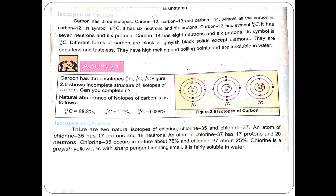Next, the isotopes of chlorine. There are two naturally occurring isotopes of chlorine: chlorine-35 and chlorine-37. Chlorine-35 has 17 protons and 18 neutrons. Chlorine-37 has 17 protons and 20 neutrons. Chlorine-35 makes up about 75% and chlorine-37 about 25% of natural chlorine.